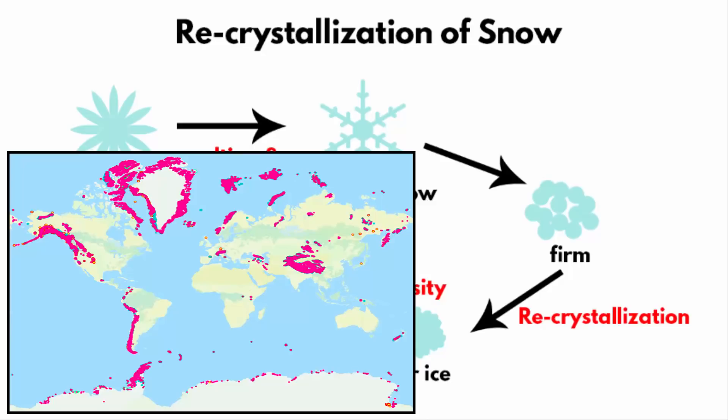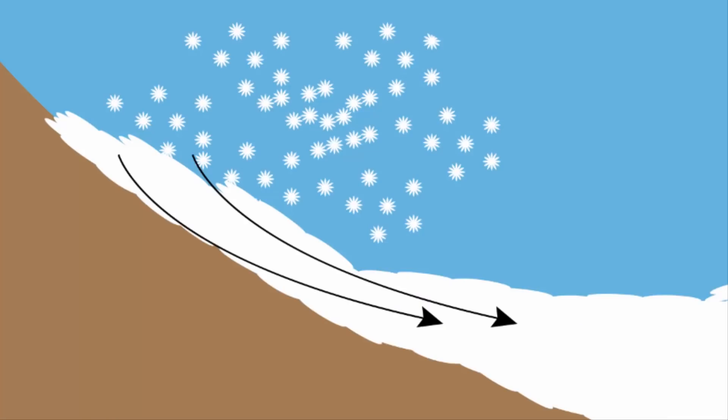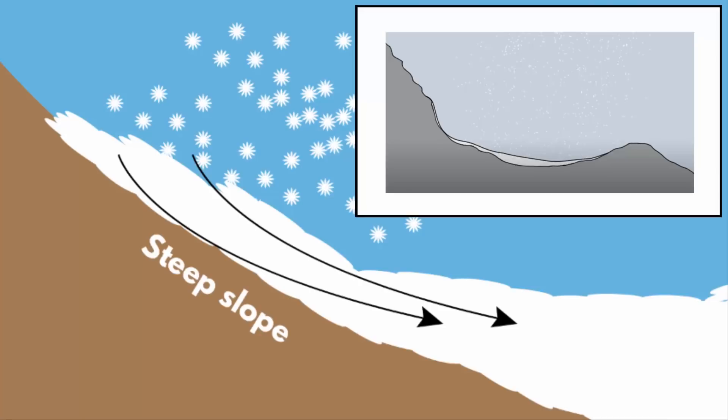Here is a map that shows where in the world you will find glaciers. Mostly glaciers occur in higher latitude and higher altitude regions. Glaciers are usually formed on steep slopes — that is the place of their accumulation.